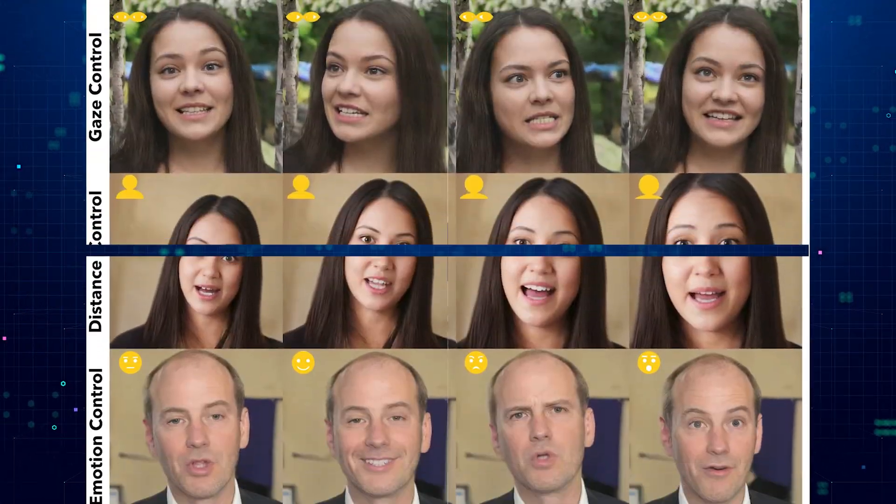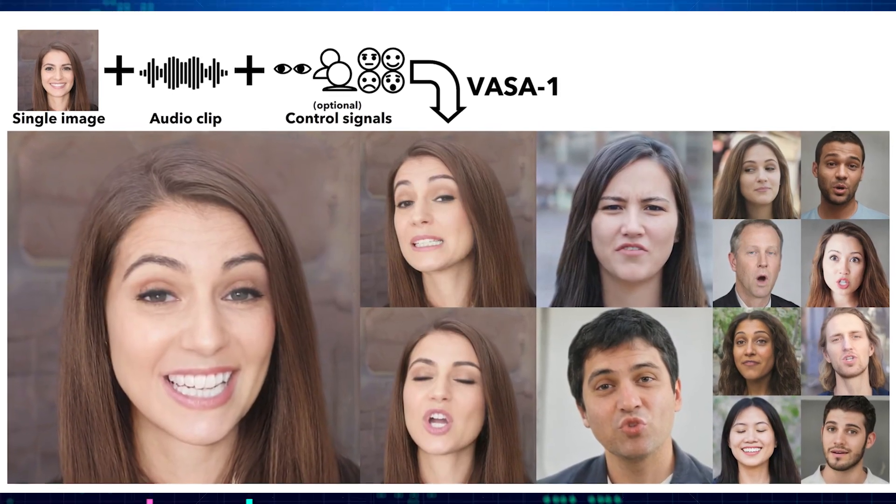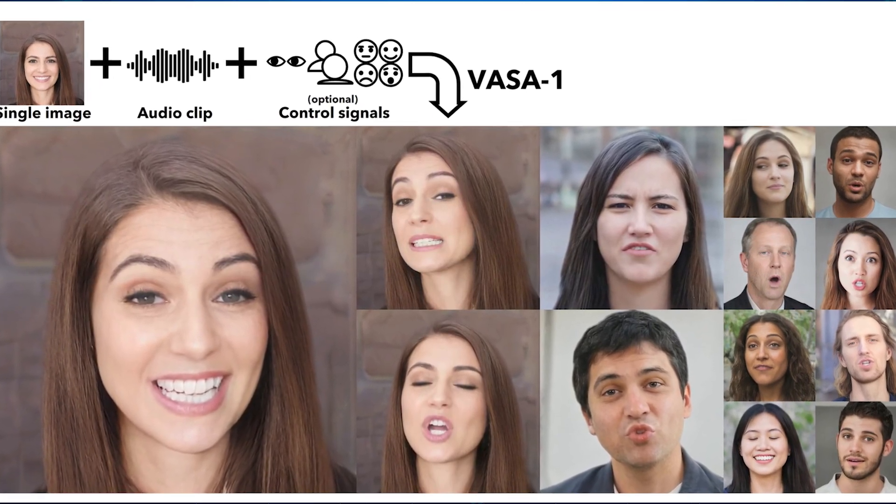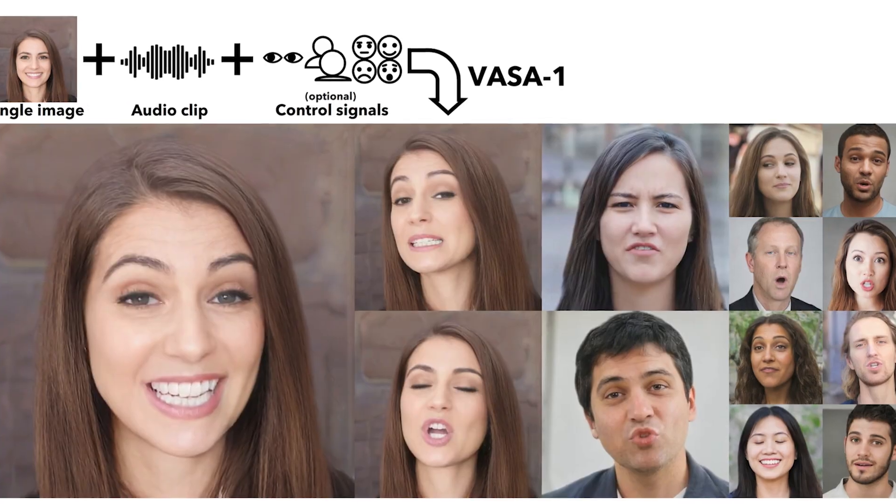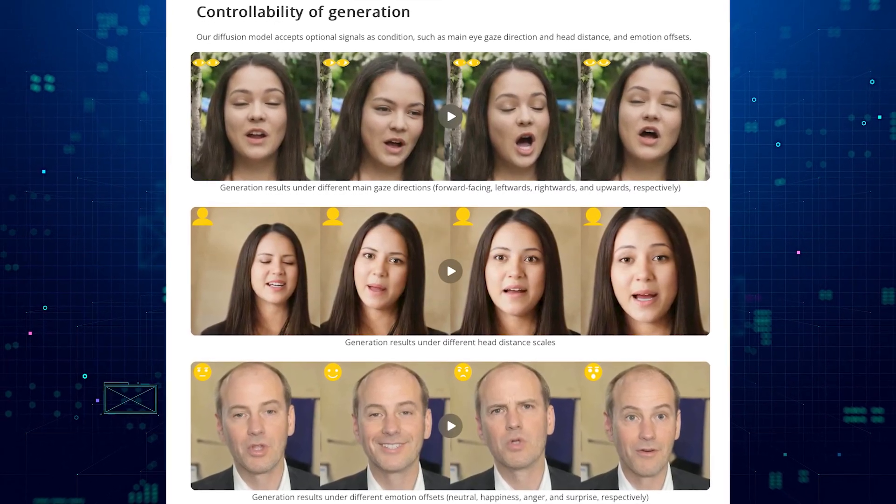VESA goes beyond just making lips move in time with the audio. It can also capture a wide range of emotions, like happiness, sadness, or anger. It can even show subtle facial expressions that make the conversation feel more natural — think about how you might raise your eyebrows in surprise or crinkle your nose when you're thinking hard. VESA can show these details too, making the talking faces feel much more believable and lifelike than anything we've seen before.